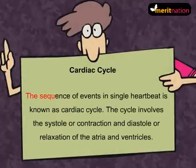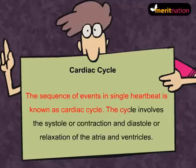The sequence of events in a single heartbeat is known as the cardiac cycle. This cycle involves the systole, or contraction, and diastole, or relaxation, of the atria and ventricles.